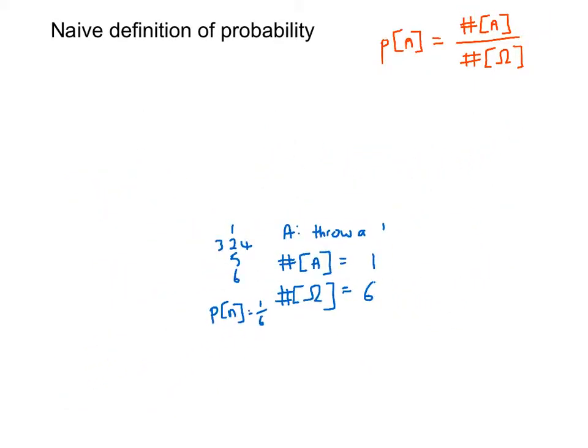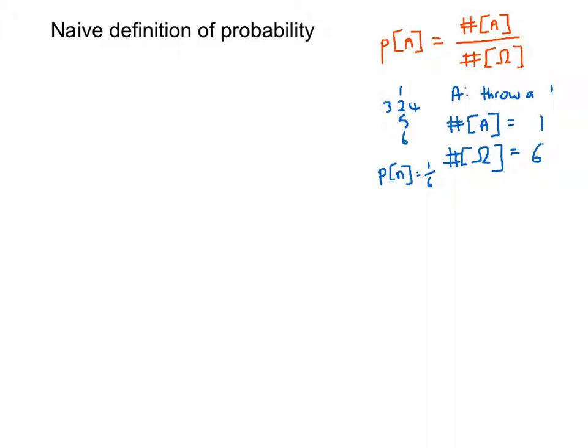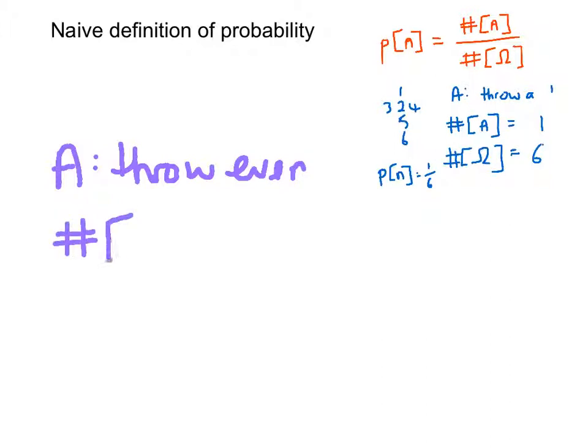Maybe we should consider another example. And this time let's consider the event A that we throw an even number. So the number of ways in which we can throw an even number. Well, we could throw a two,